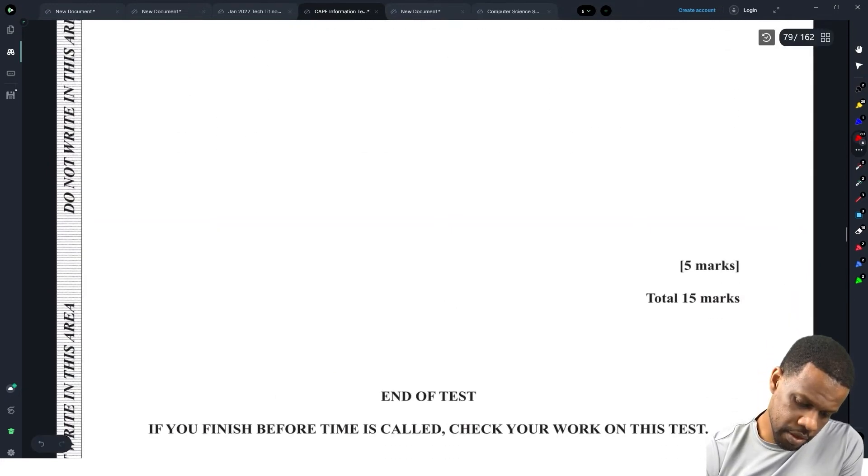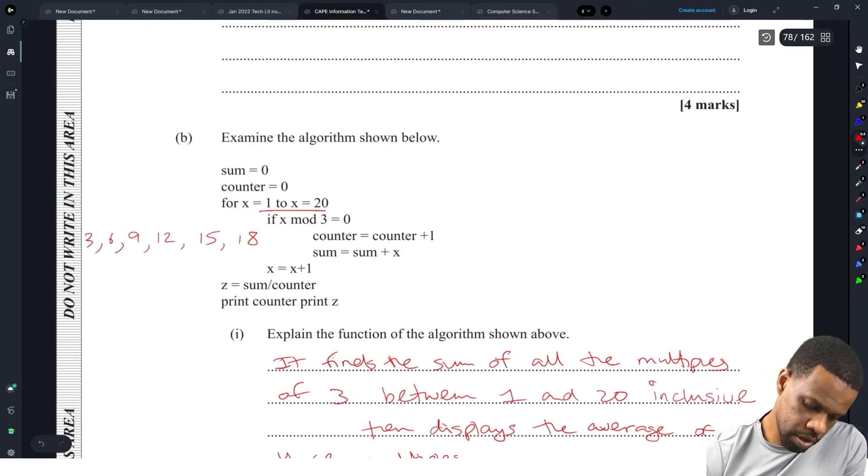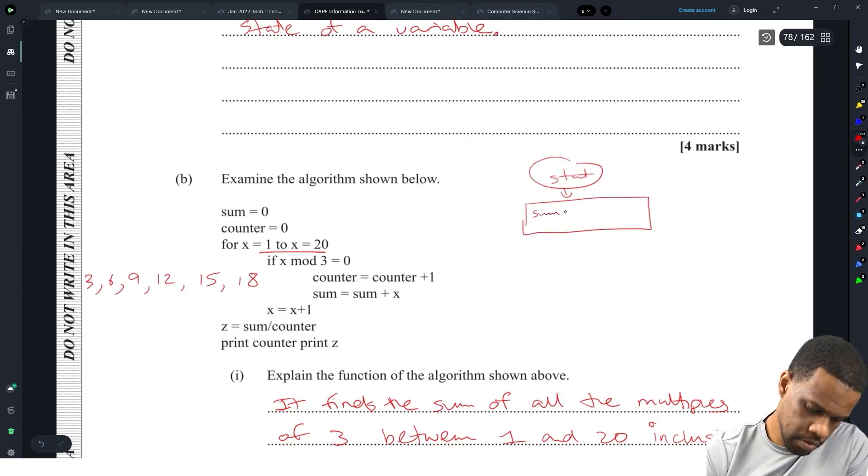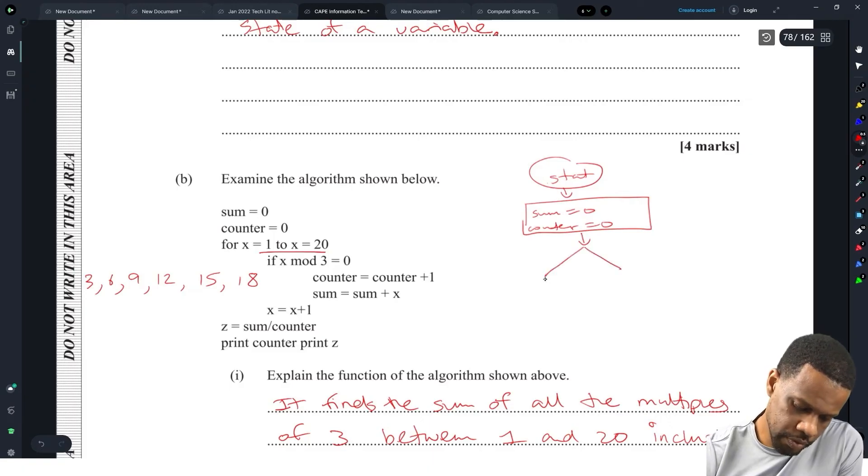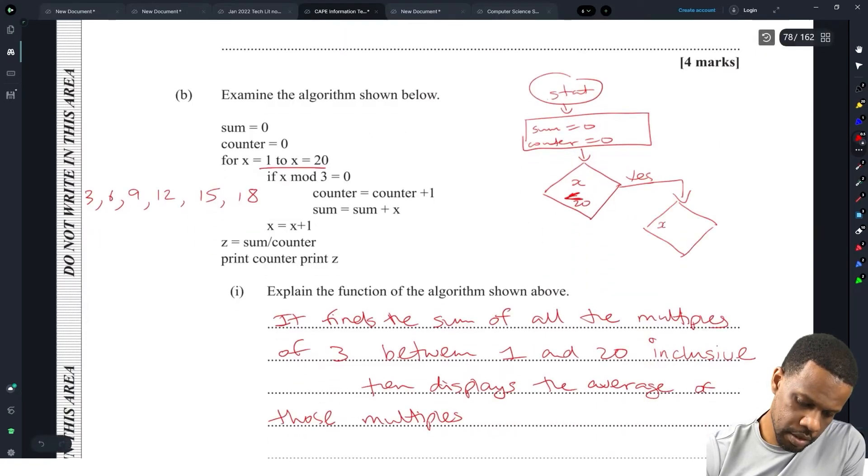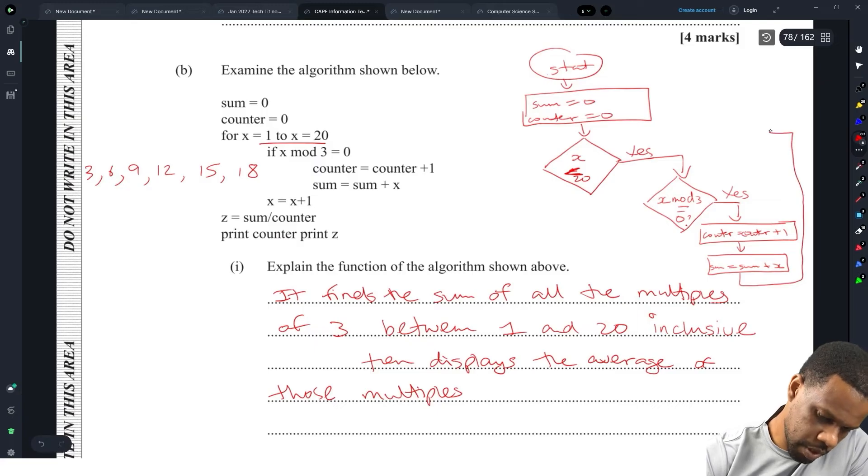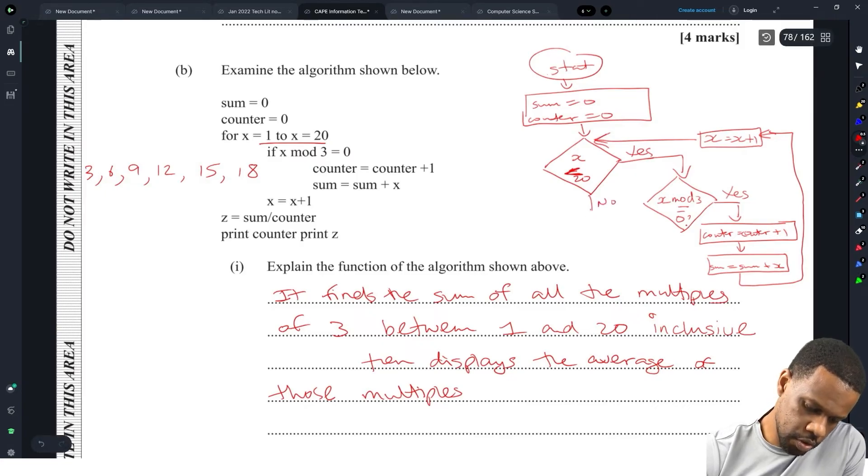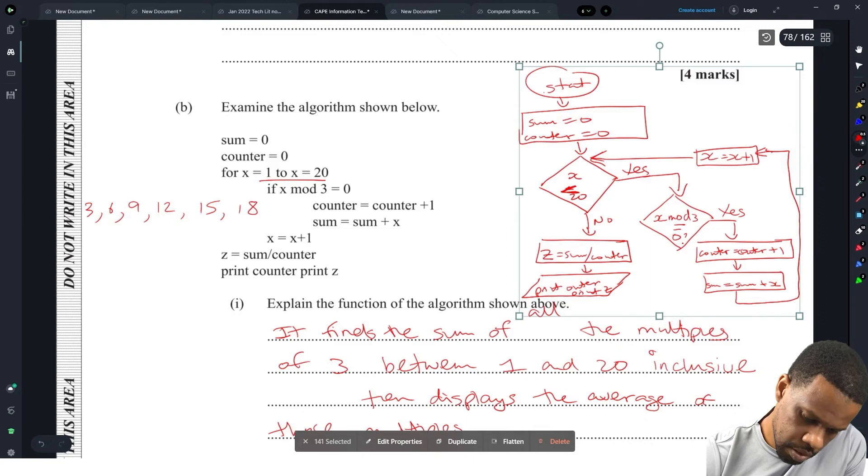Design a flowchart to represent the algorithm. A flowchart for this would look something like start, sum equals zero, counter equals zero. We need a complete while loop. X has to be less than twenty. Is X less than twenty? If yes, then you go to the decision: is X mod three equal to zero? If yes, then counter equals counter plus one, and sum equals sum plus X. Then X equals X plus one, and we reach up here and check if X is still less than twenty. If the answer is no, the loop is finished. We do the calculation for Z equals sum divided by counter, and then print counter and print Z.